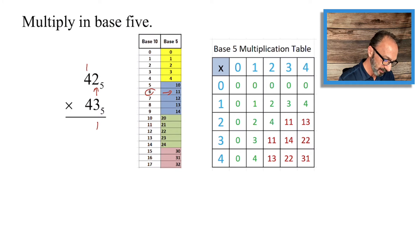3 times 4 is 12, add 1 that we carried earlier, that's 13. And 13 is what? 13 is two fives and three units in base 10, that's in base 5.